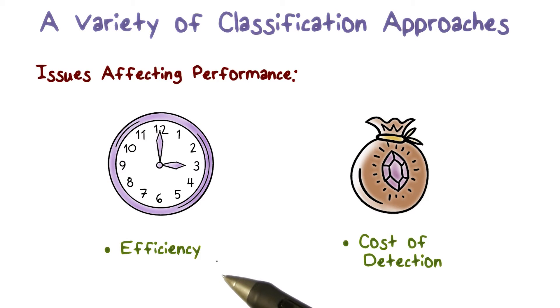When we compare these approaches, we need to consider both efficiency and cost. Efficiency here means how fast we can learn a model from training data, and how fast we can apply the model to the observed data to determine whether it is anomalous or normal.